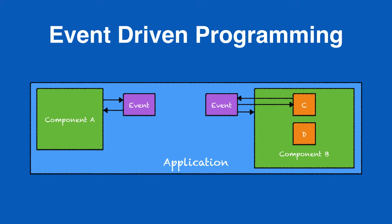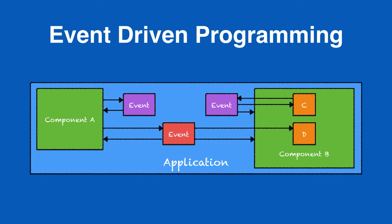But what about application events? Application events are fired by a component, and as we can see here, if component A fires this particular event, component A can handle that application event and component B could also handle it as well. Application events follow a traditional publish-and-subscribe model, so component D could also subscribe to that event and handle it if it wanted to. Any component within the application that subscribes to that event can handle it.